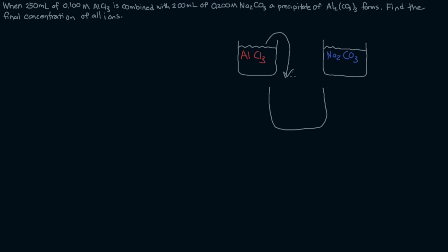So this solution ends up in here, this ends up in here, and we get our combined solution. And we will get our precipitate of aluminum carbonate falling to the bottom. So that's Al2(CO3)3 forming in there.